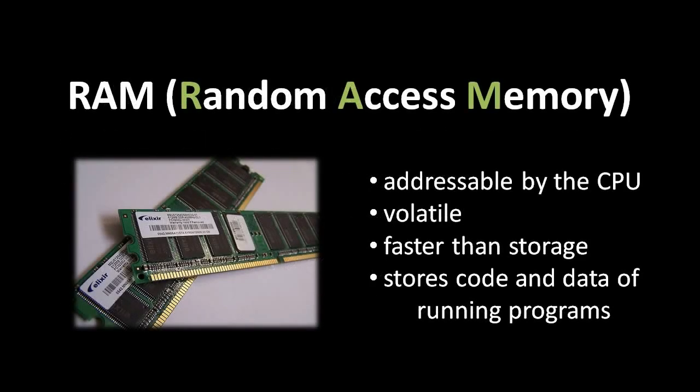Of all the components in the system, the RAM — the system memory — is the simplest. RAM is really just a big bucket for storing bits, and as far as the CPU can see, these bits are organized into bytes, each with its own address — a numeric value that uniquely identifies that byte. The first byte has the address 0, the second has address 1, the third has address 2, and so on, all the way up to the last byte.